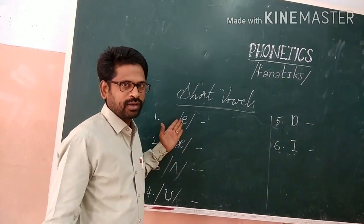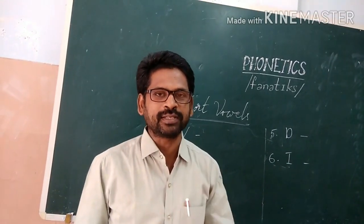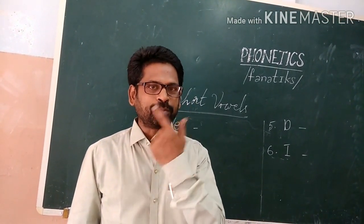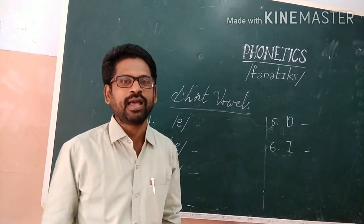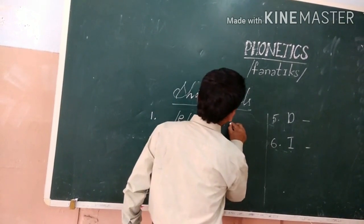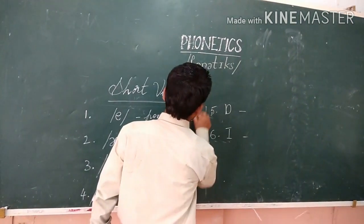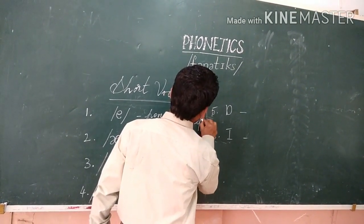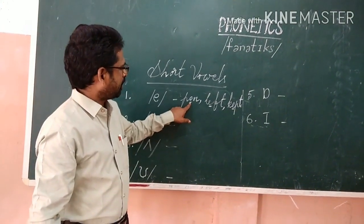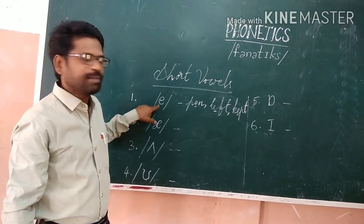The first short vowel — observe the vowel. The sound of this first short vowel is: look at my mouth clearly. The sound is 'e.' Pay attention to the usage of tongue and lips. For example: P-E-N — pen; L-E-N-T — left; K-E-P-T. The letter I have underlined is pronounced as this symbol. This is not the alphabet; this is the phonetic symbol, and this is the pronunciation.